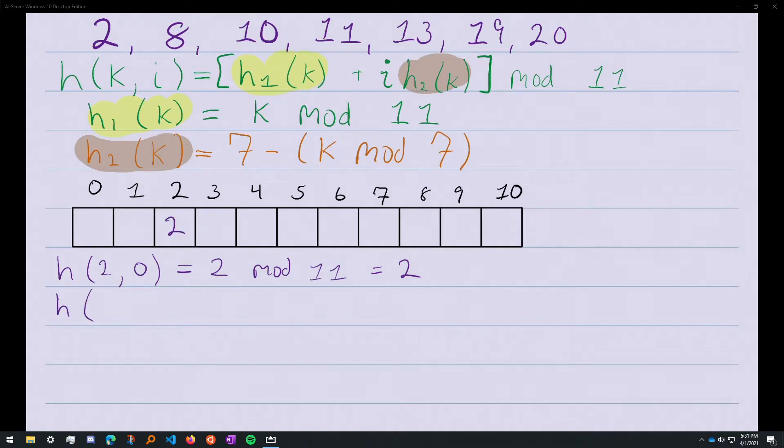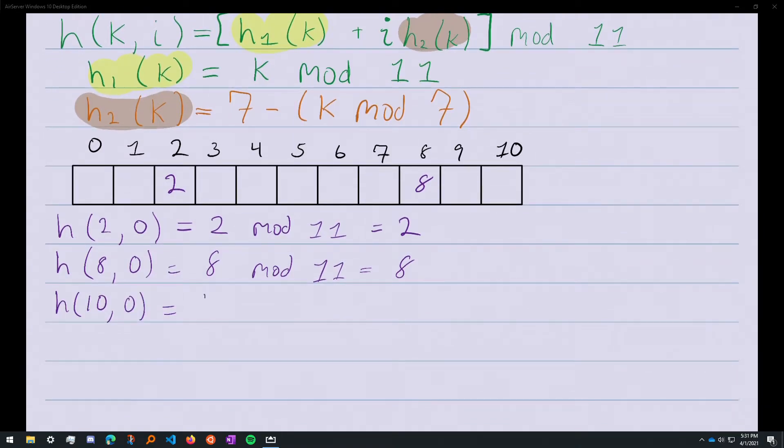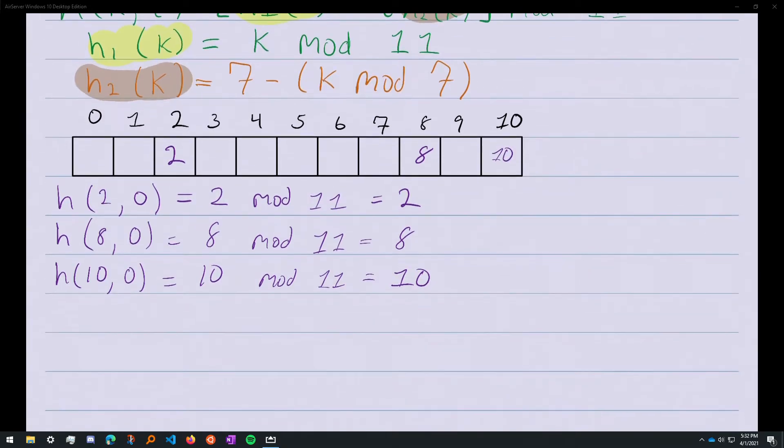Next we move on to 8. h(8,0) equals 8 mod 11. Is there a collision? No. h(10,0) equals 10 mod 11. Is there a collision? No. And we go on.